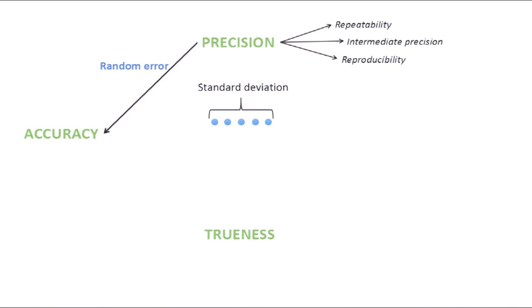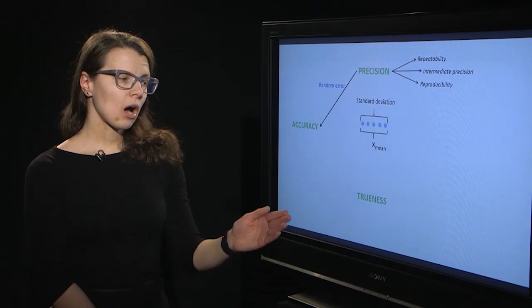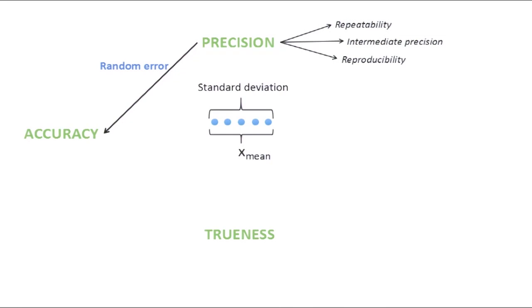There's a second part that we need for accuracy and this is trueness. How do we get that is when we analyze mathematically our parallel measurements we can actually find the mean value.